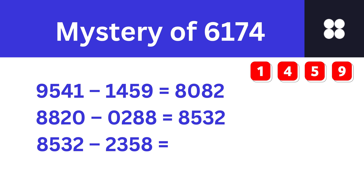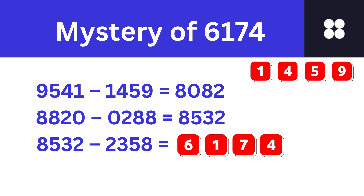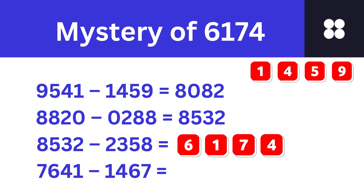Arrange 8532 in descending and ascending orders — you will get 8532 and 2358. Subtract the smaller number from the bigger number. What number do we get? We get 6174. Arrange 6174 in descending and ascending orders and subtract them. What number do you get now? Once again we get 6174.